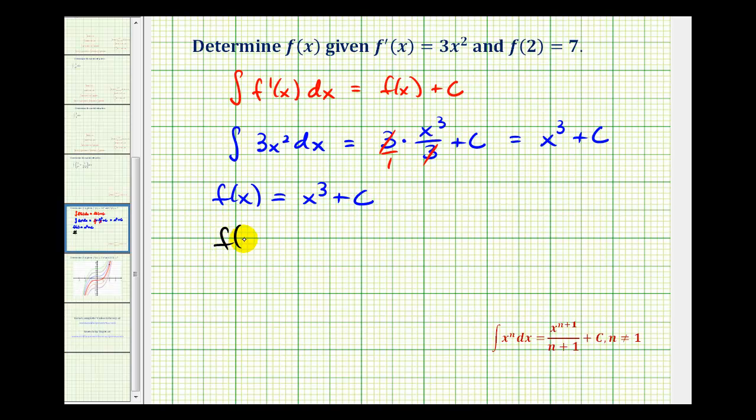So f(2) must equal 2³ plus c, which must equal 7. So we have 8 plus c equals 7. Subtracting 8 on both sides, we have c equals negative 1. Which means the particular solution, or the exact function that satisfies these conditions, would be x³ minus 1.